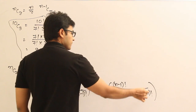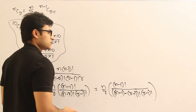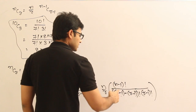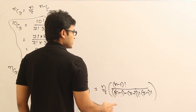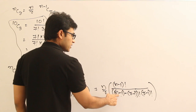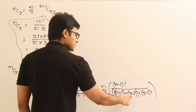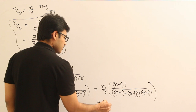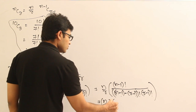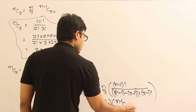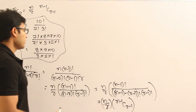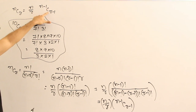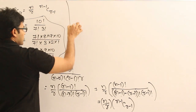If you observe this expression, it is nothing but N minus 1 C R minus 1. We are getting N minus 1 factorial divided by N minus 1 minus R minus 1 factorial into R minus 1 factorial. Therefore NCR can be written as N by R into N minus 1 C R minus 1. It is verified and true.